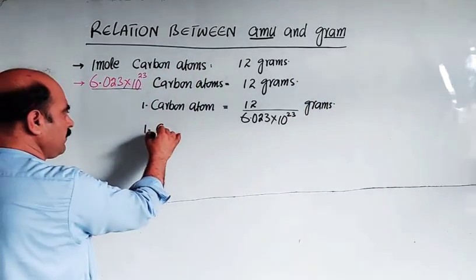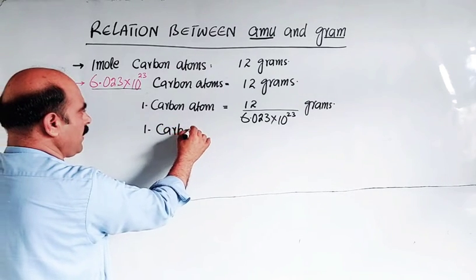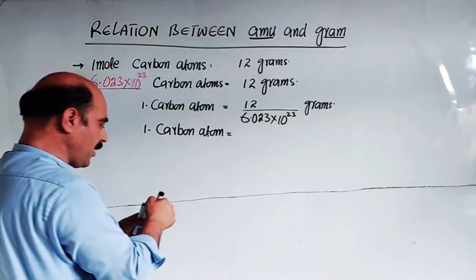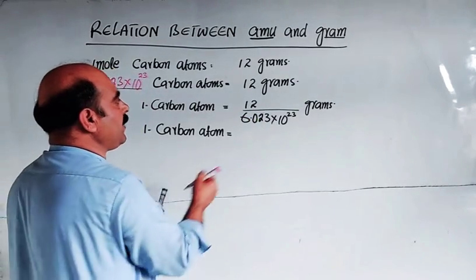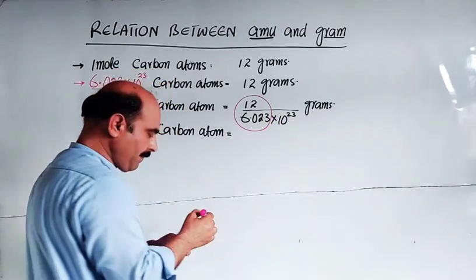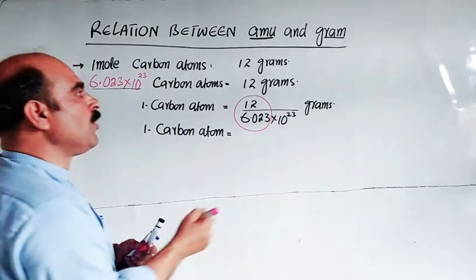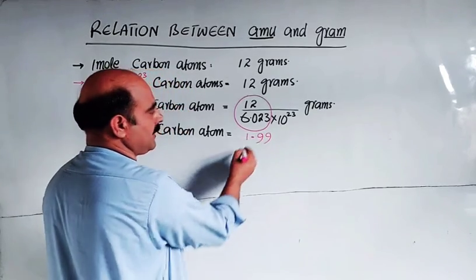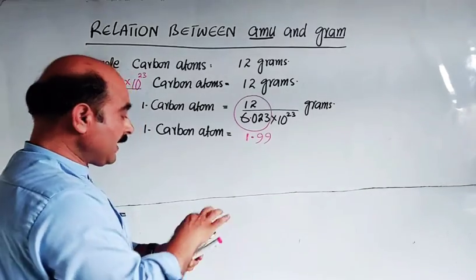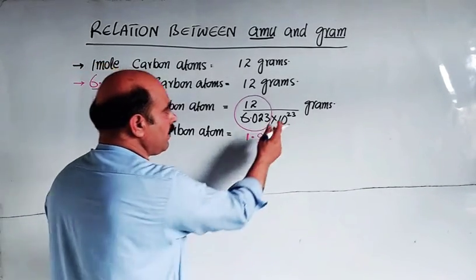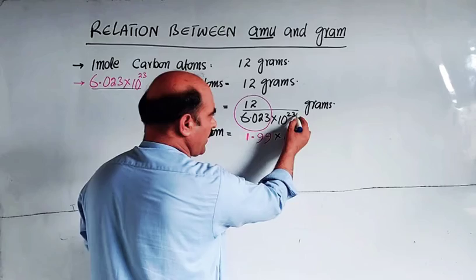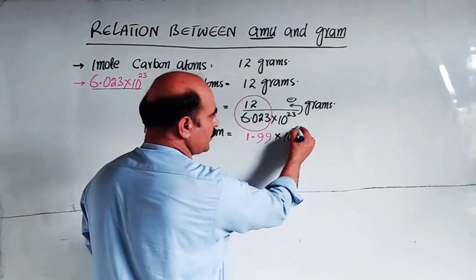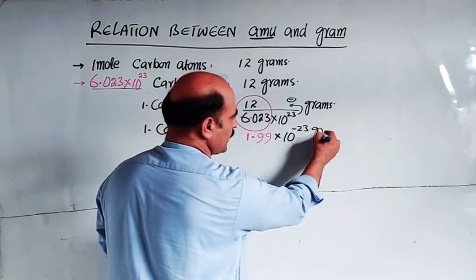One carbon atom mass equals 12 divided by 6.023 × 10^23, which equals 1.99 × 10^-23 grams. The power becomes inverse, so it's minus 23.